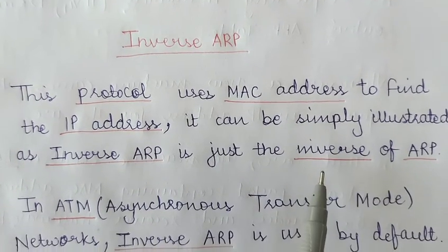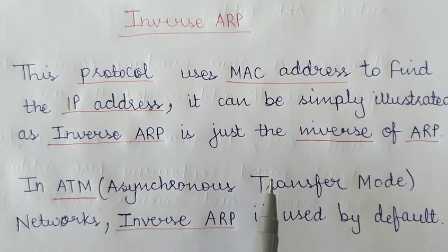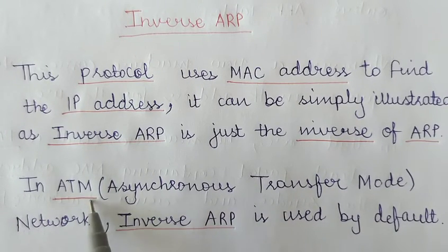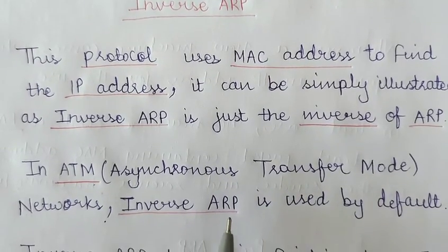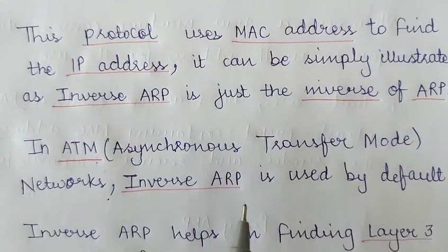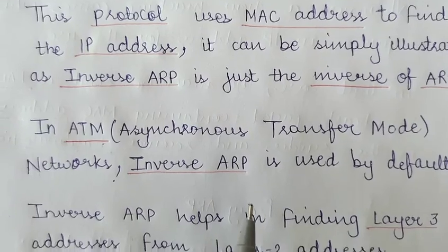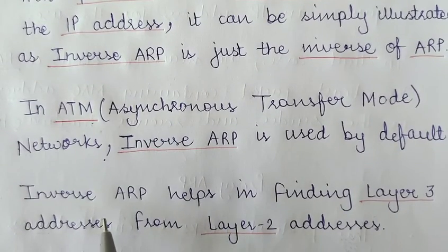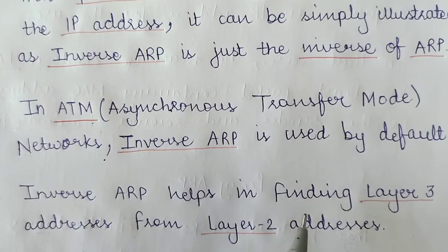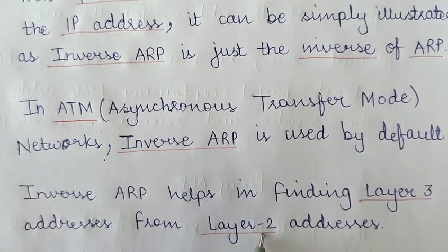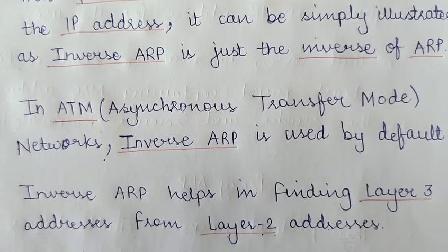Inverse ARP is used by default in ATM networks — asynchronous transfer mode networks. Inverse ARP helps in finding the Layer 3 address, that is the network layer address, from the Layer 2 address, that is the data link layer address.